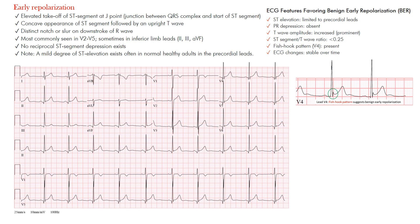What we want to look for is a concave appearance of the ST segment followed by an upright T wave. The best leads where we most commonly see it are V2 through V5.